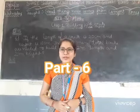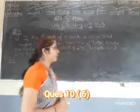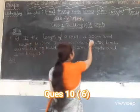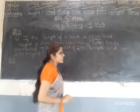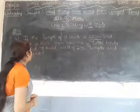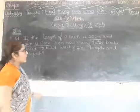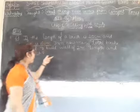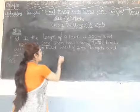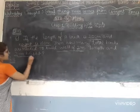Now we will start question number 6. If the length of a brick is 20 cm and height is 10 cm, then how many total bricks can be needed to build a wall of 2 m length and 2 m height?